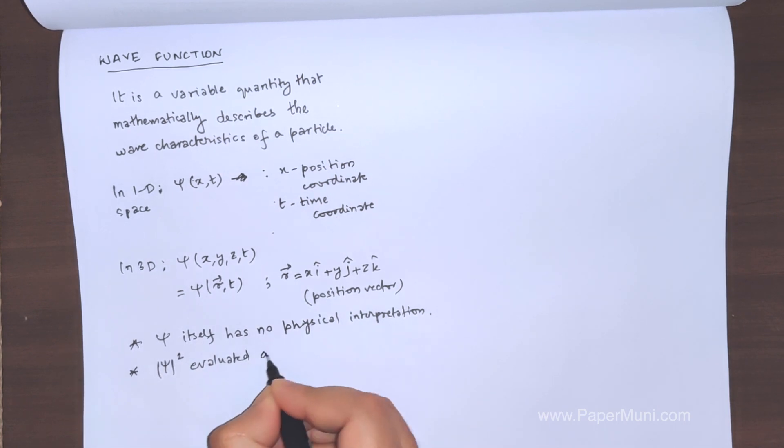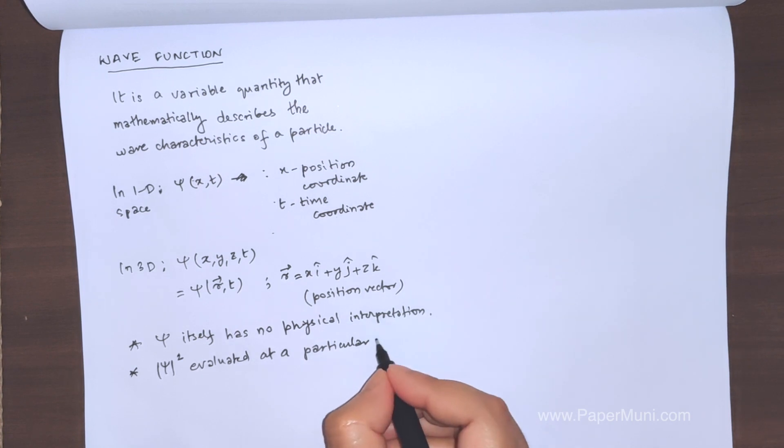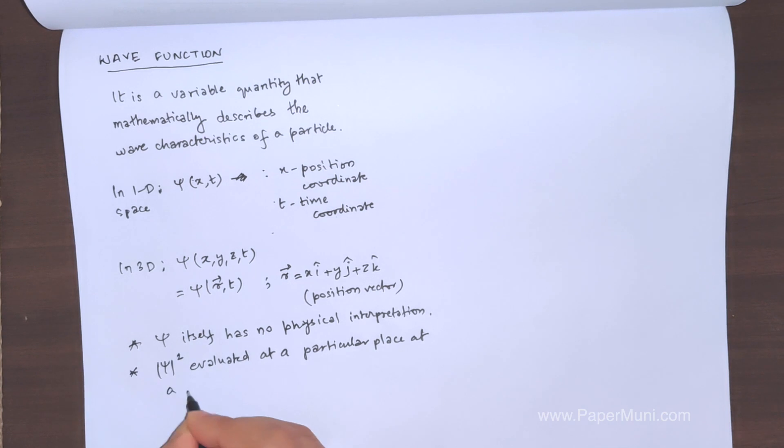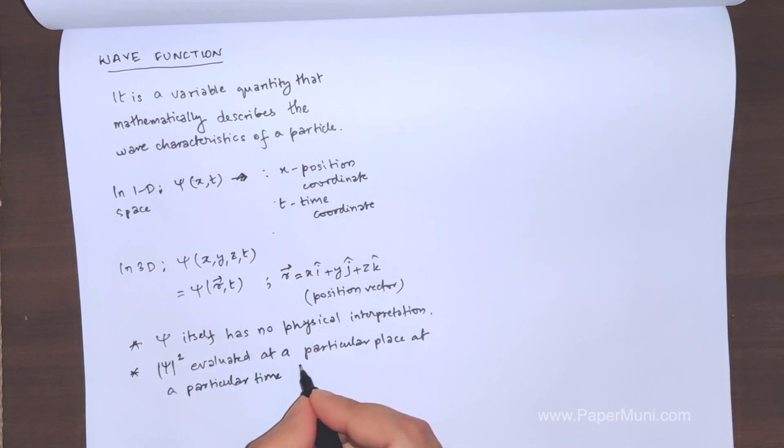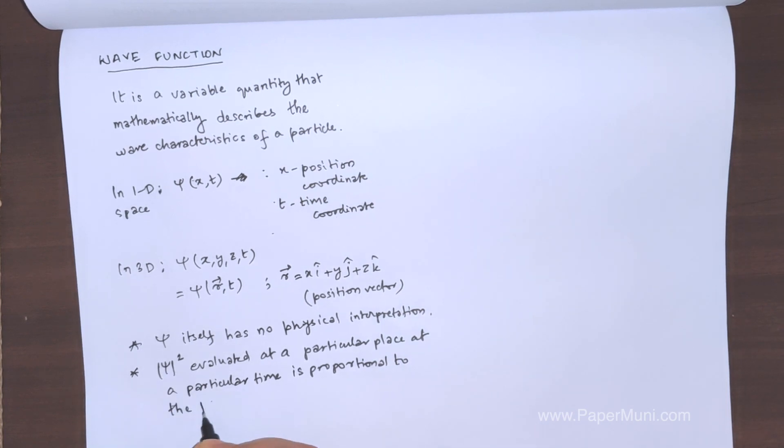But its interpretation was given as such that if you take a mod square, evaluated at a particular point, a particular place at a particular time, is proportional to the probability of finding.